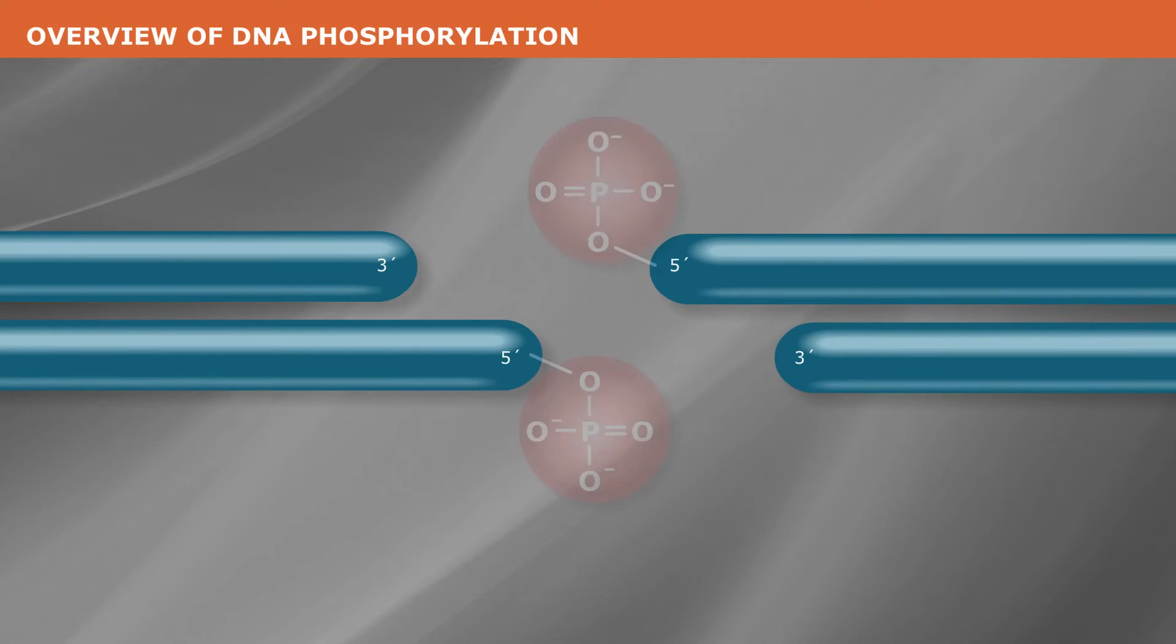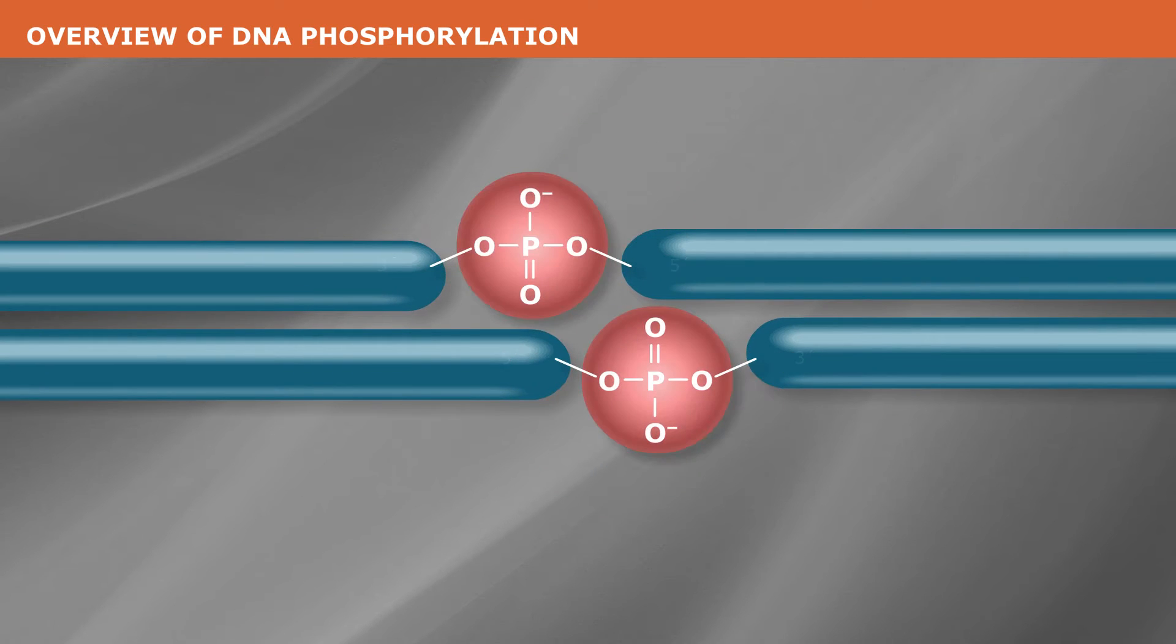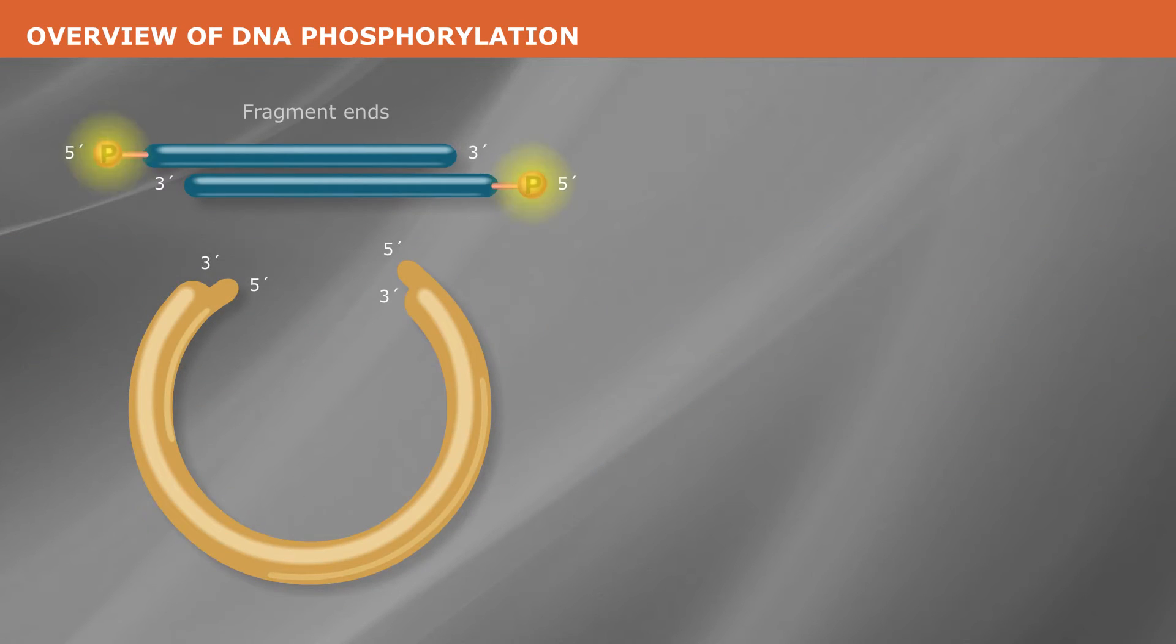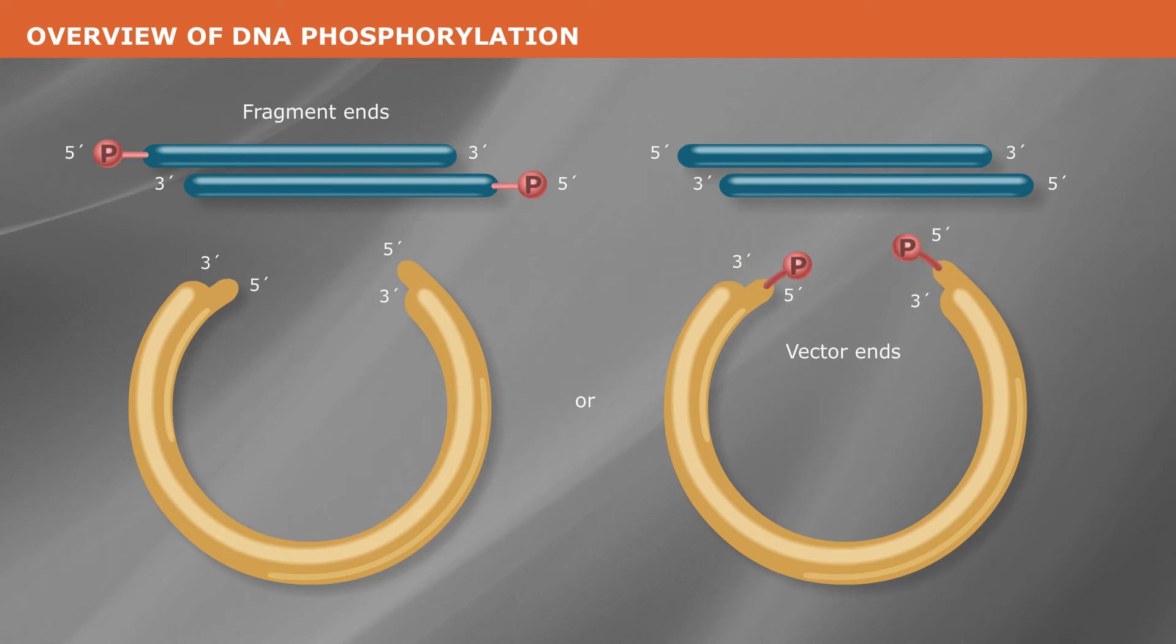In standard cloning protocols, a 5'-phosphate is required to serve as the donor in the ligation reaction. At a minimum, either the fragment ends or vector ends must be phosphorylated.